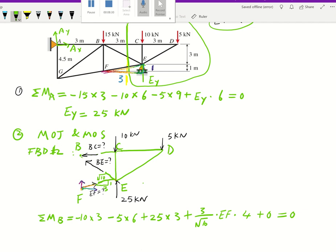In that situation you go ahead and solve this problem. You will likely get EF as negative 3.95 kilonewtons.